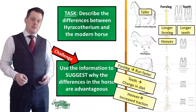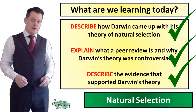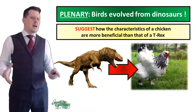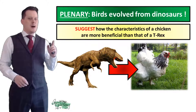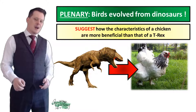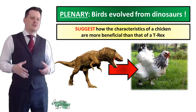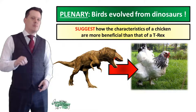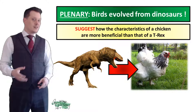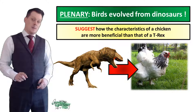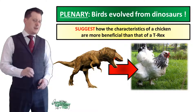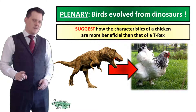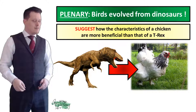We can now describe some of the evidence which supports Darwin's theory. There's only one more thing to do, which is our plenary. Birds evolved from dinosaurs — I'd like you to suggest how the characteristics of a chicken are more beneficial than those of a T-Rex. With that, this concludes everything you need to know about Charles Darwin. I hope you've had a great lesson, and I'll see you next time.